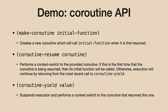The second one is coroutine-resume — this is how you actually run coroutines. This performs a context switch completely in user space: it just swaps out the stacks for the currently running thread, with some special setup if you're resuming a coroutine for the first time. And then there's coroutine-yield, which is basically an asymmetric operation to resume. It lets you pass a value back to the coroutine that resumed you, so it's a way of switching again. Those are the three functions we're going to see in the demo.